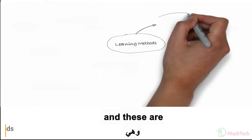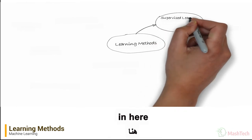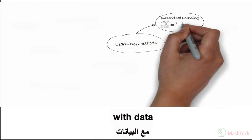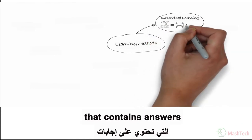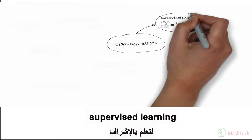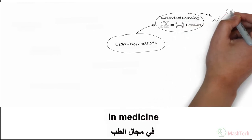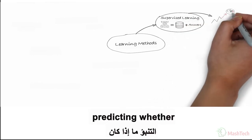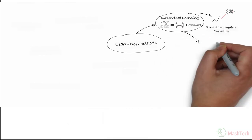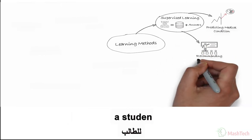The first is supervised learning — here you train the algorithms with data that contains answers. Examples of supervised learning include: in medicine, predicting whether a person will get diabetes; and in education, recommending courses for a student to enroll in at the university.